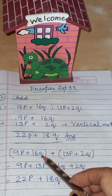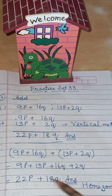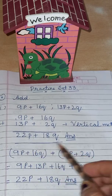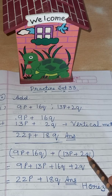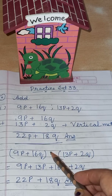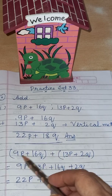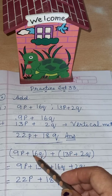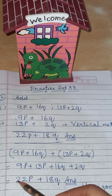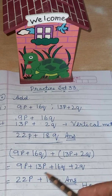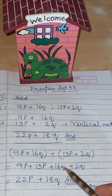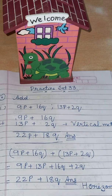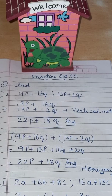In horizontal form, put both binomials in brackets with a plus sign between them. Open the bracket and bring like terms together: 9p plus 13p, and 16q plus 2q. Then add: 9 plus 13 is 22p, and 16 plus 2 is 18q. This is called the horizontal method.